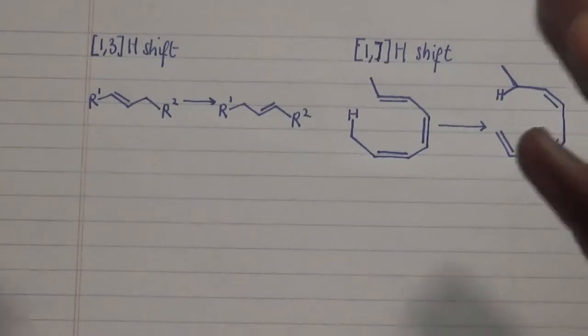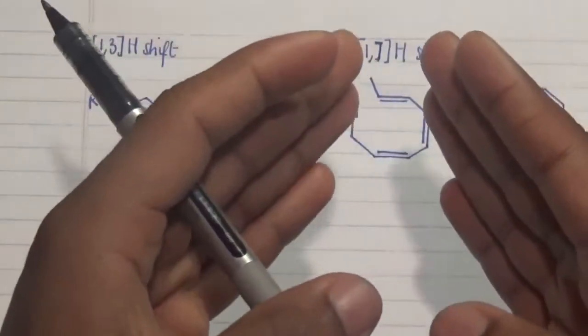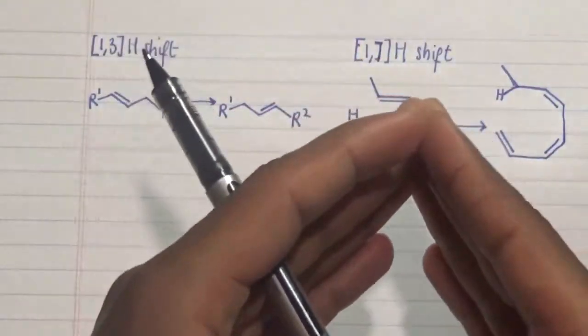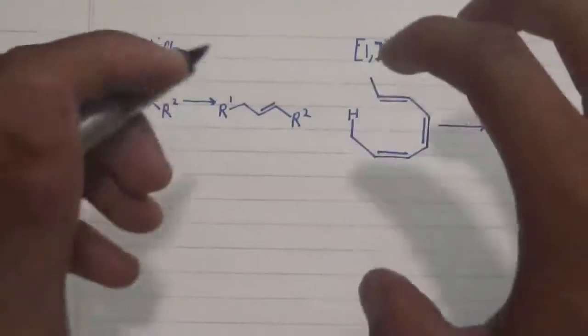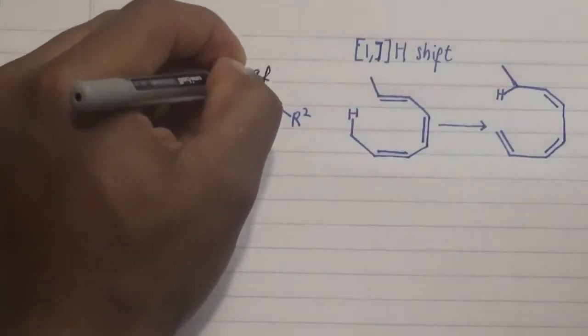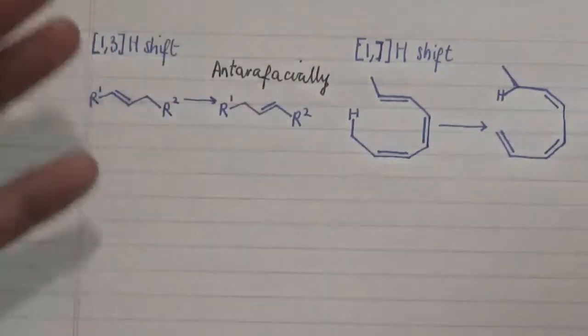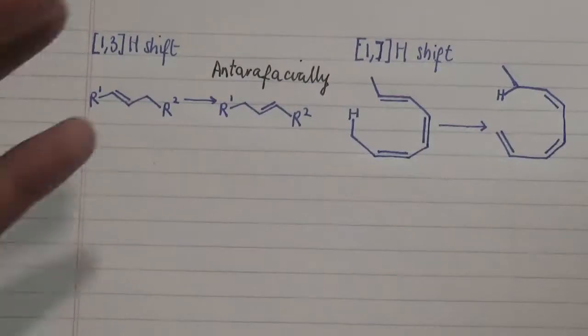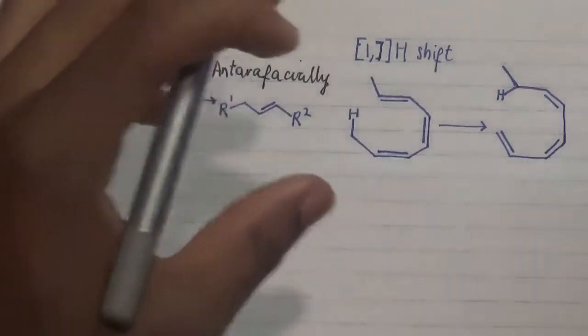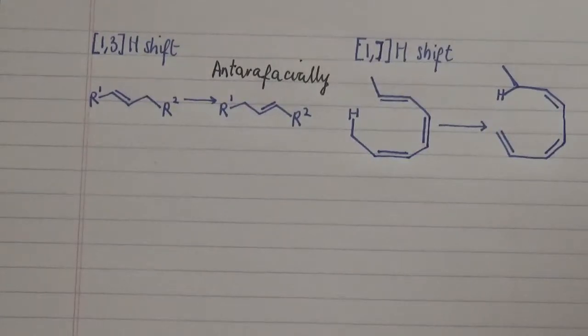Now in this particular case we're going to look at the 1,3 hydrogen shift and comparing that with the 1,7 hydrogen shift. Now both reactions are actually favorable superficially, and we're going to look at that by going to the molecular level.